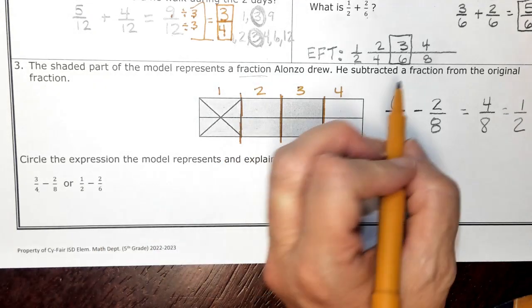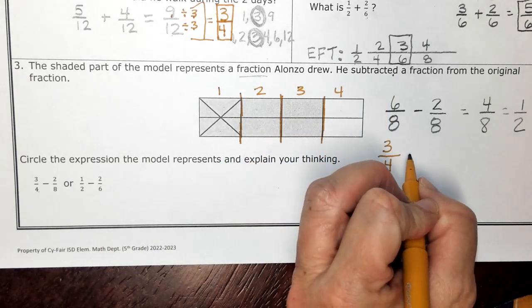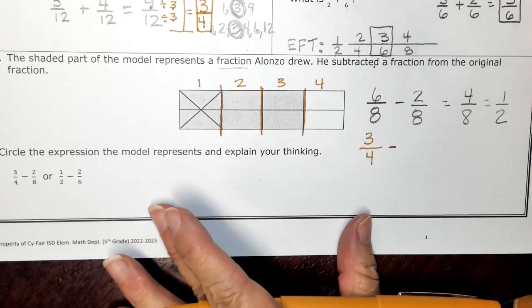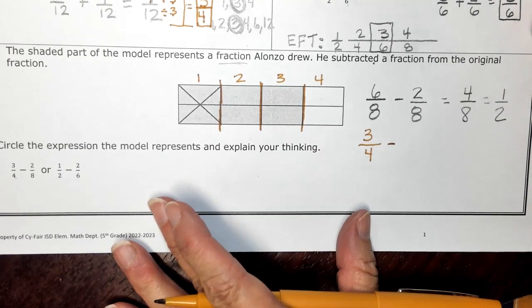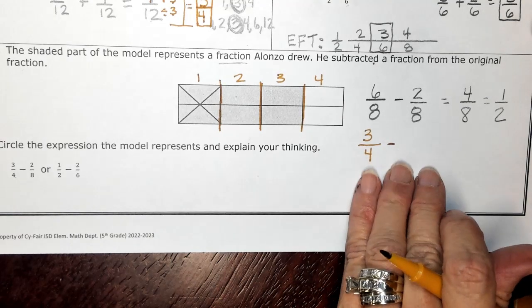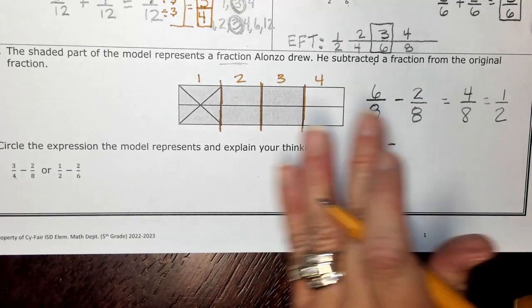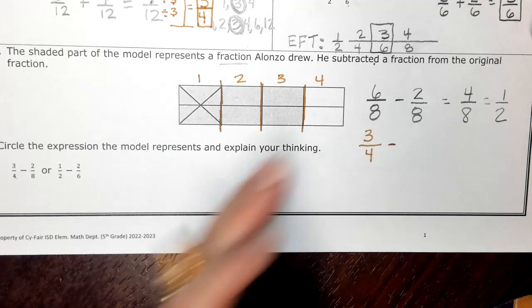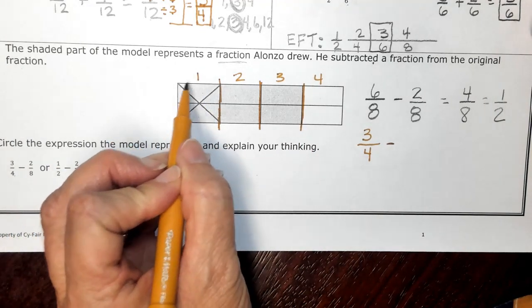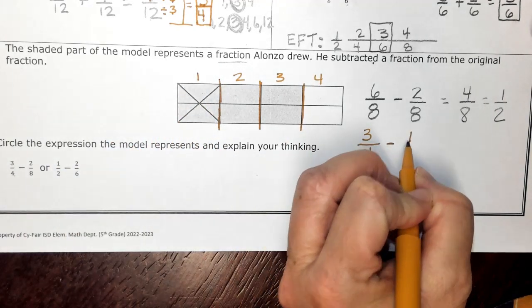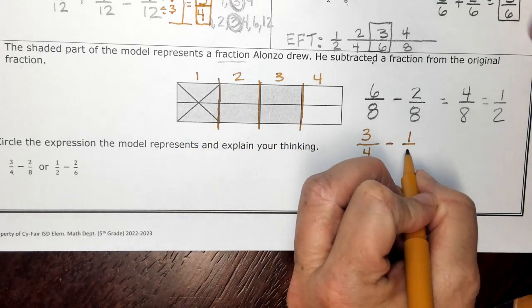We know that he's subtracting because they told us that in the story. So I'm going to go ahead and write my subtraction sign. And I have to think about another name for two eighths. So when I go back to my picture model, I can see that I have one whole piece that's X'd out out of my four equal pieces.